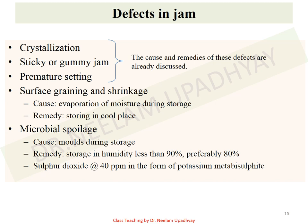Microbial spoilage — generally molds grow in jam during storage. If humidity is less than 90 percent, preferably 80 percent, microbial spoilage can be prevented. Also, adding sulfur dioxide as a preservative can eliminate these kinds of defects.